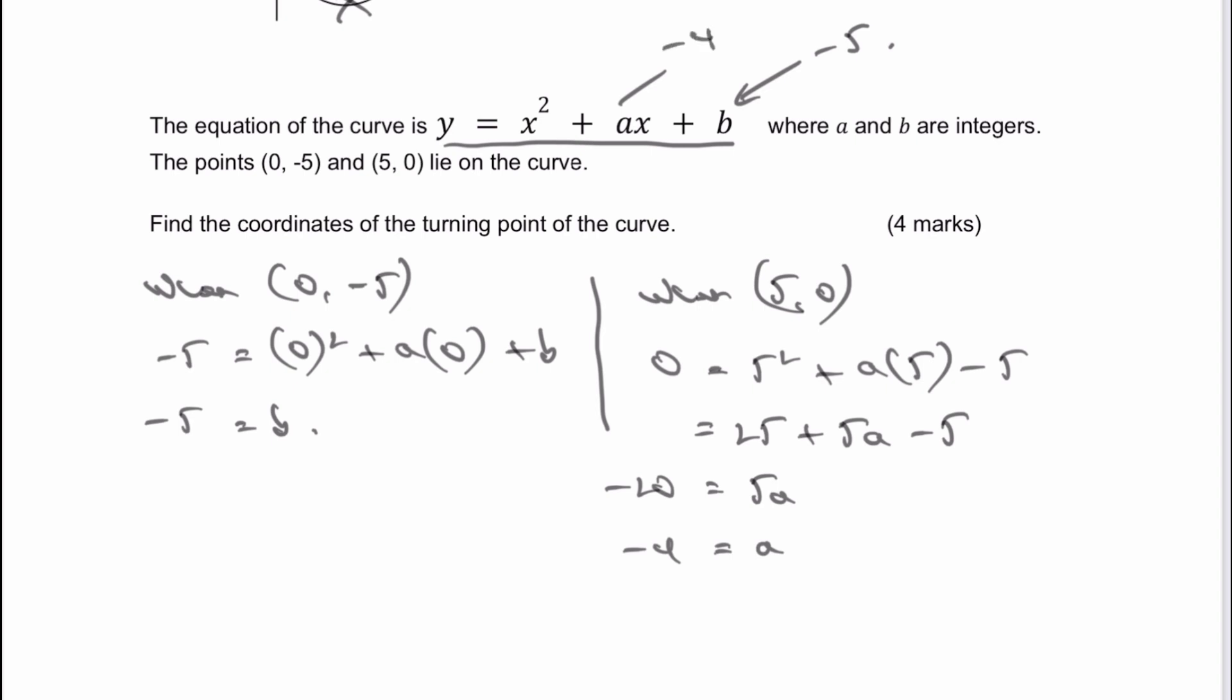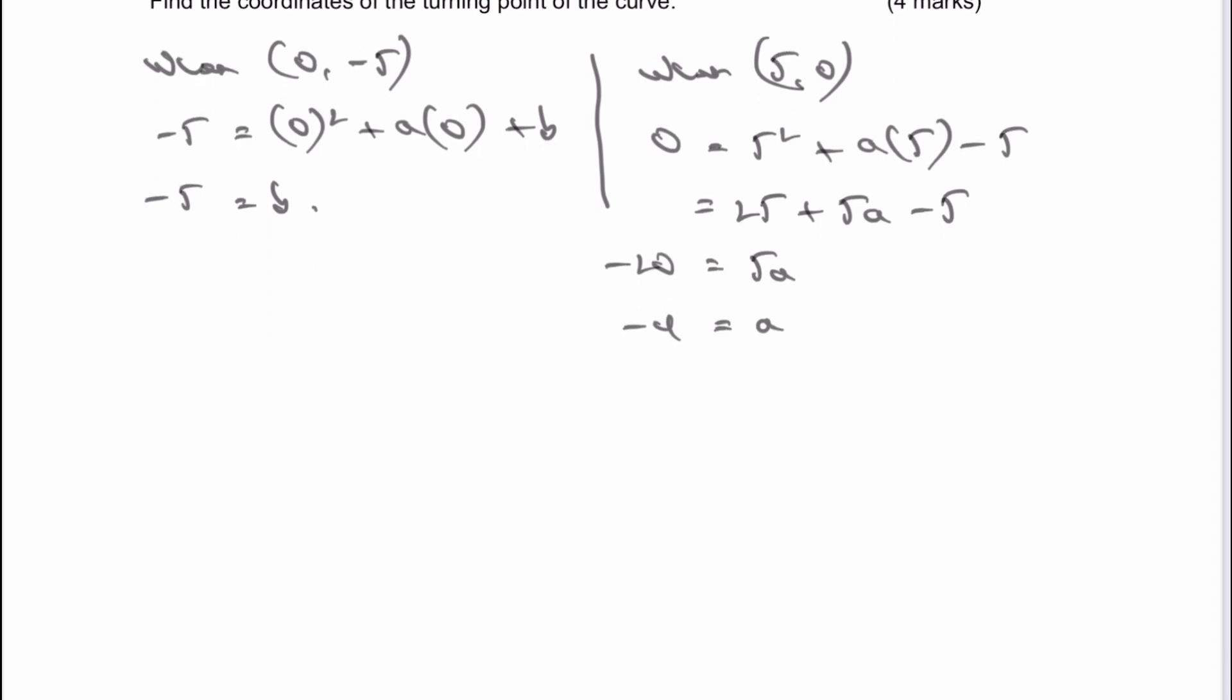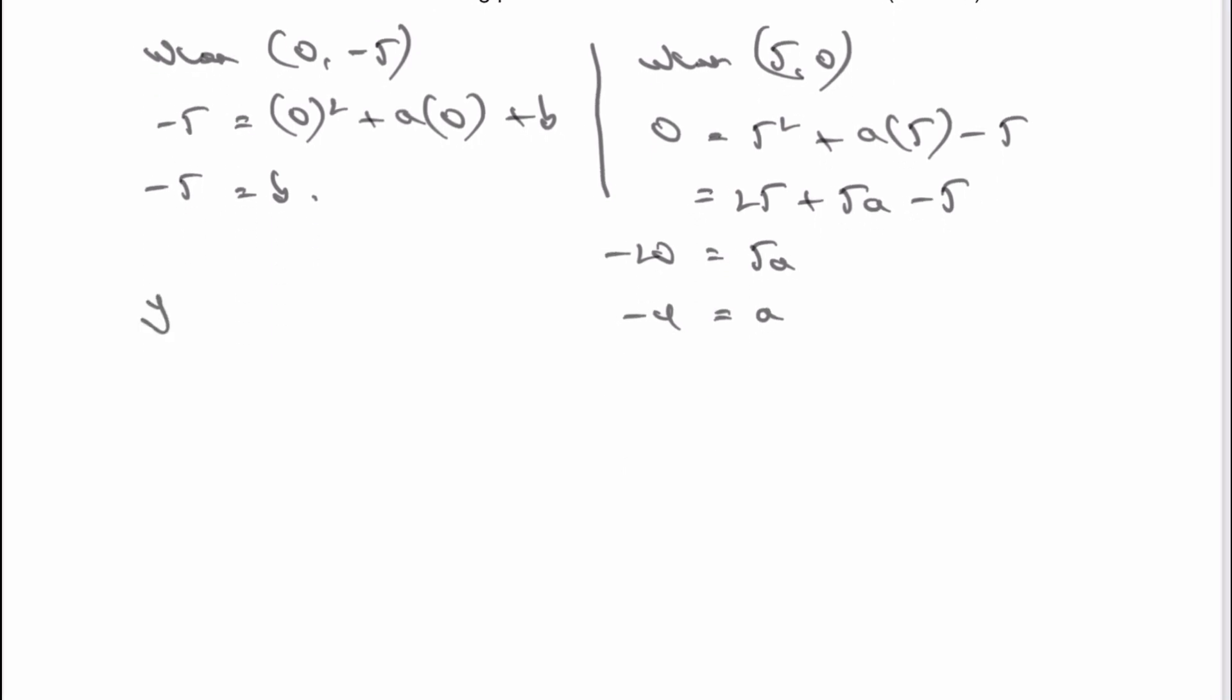So I've now got the quadratic equation that I need, which is going to be y equals x squared minus 4x minus 5, and that's the equation of the curve. And then in order to calculate the turning point, I just need to complete the square.